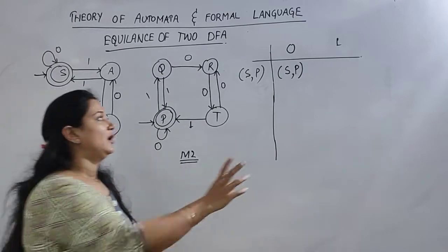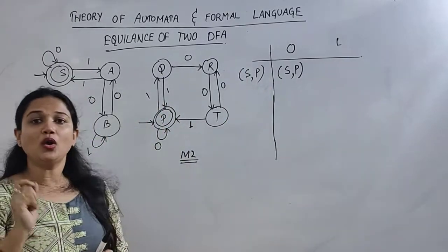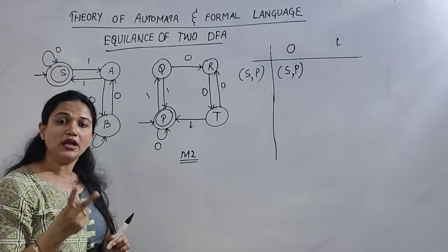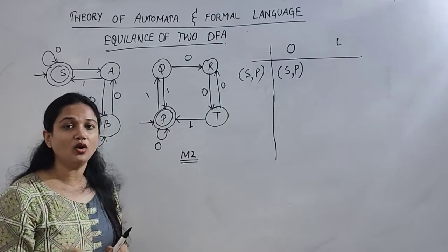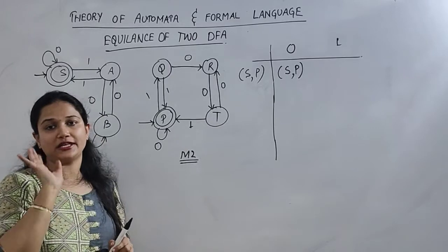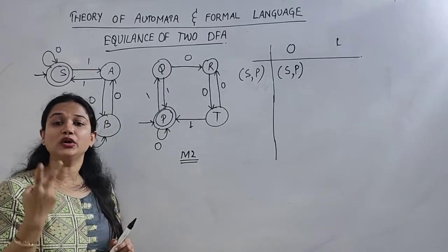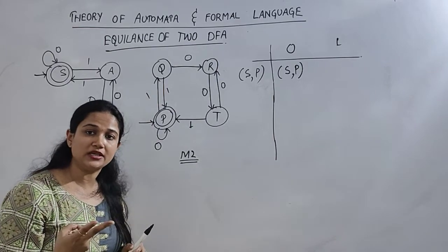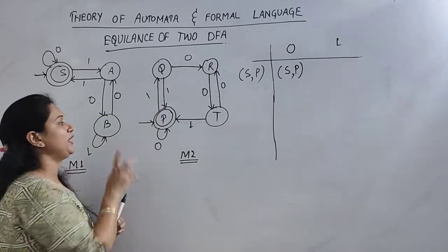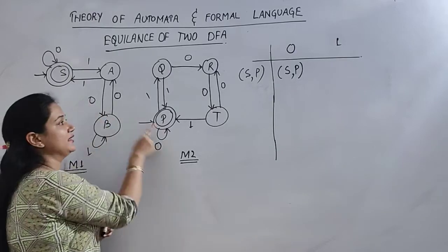Now, the pair that is formed, we will check here that both are either non-final states or both are final states. Either both are non-final or both are final states. Now, your pair SP, both are final states. That is a compatible pair.